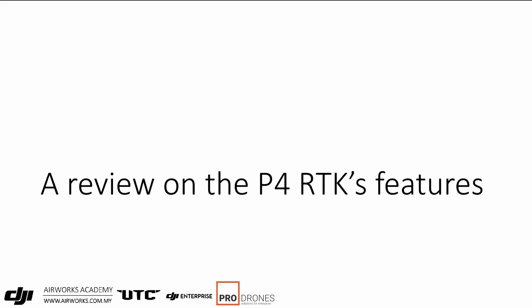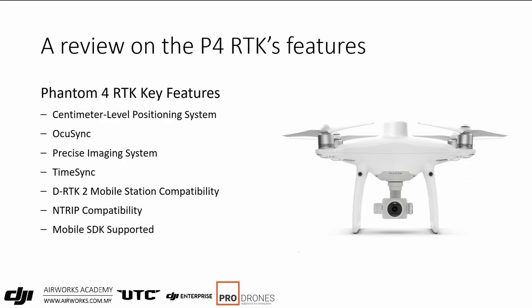First, a view on the P4RTK's features. It has quite a few key features, especially at the time of launch. It had an RTK system giving centimeter-level positioning. It had OcuSync 1, a low-latency communication system which also allowed more than one drone or object to be linked to a remote — that's how you get the DRTK2 linked to the remote while the remote is also linked to the drone.